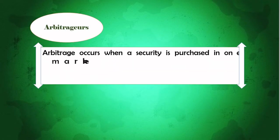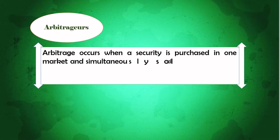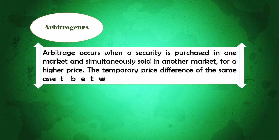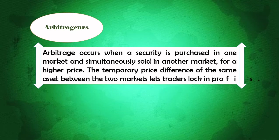Arbitrage occurs when a security is purchased in one market and simultaneously sold in another market for a higher price. The temporary price difference of the same asset between the two markets lets traders lock in profits.